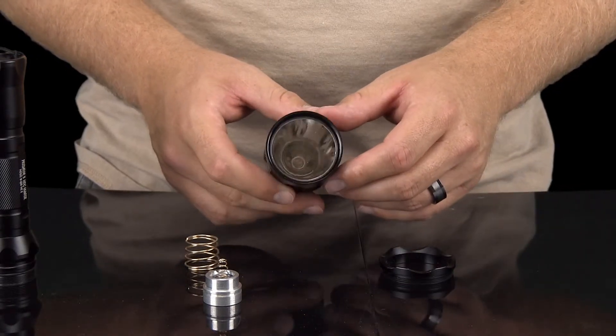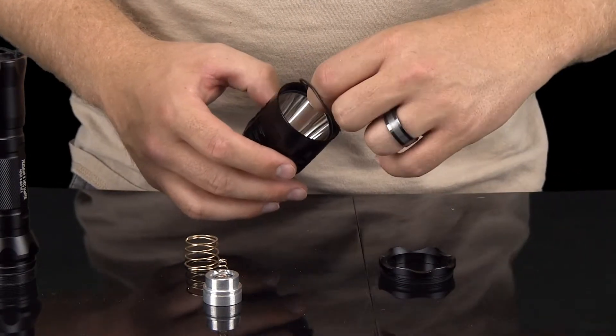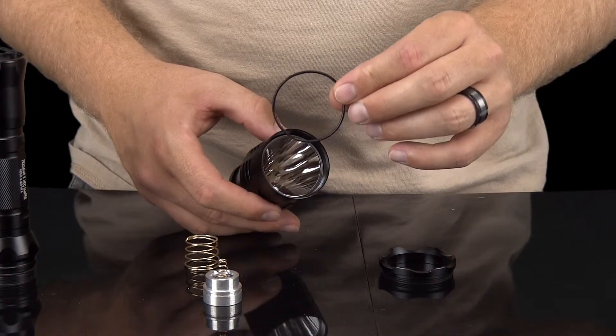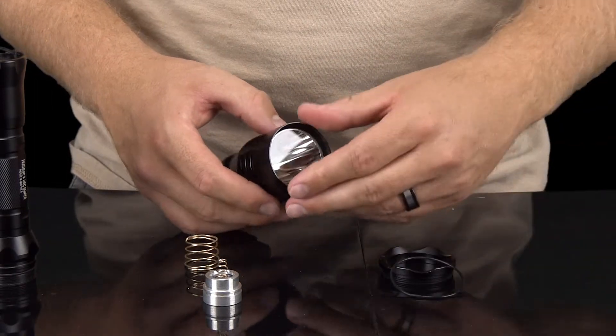you will see underneath a small O-ring and a glass lens. Remove both items, taking note that the O-ring goes on top of the lens.